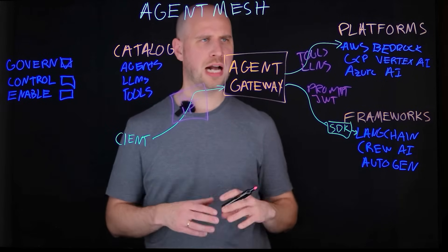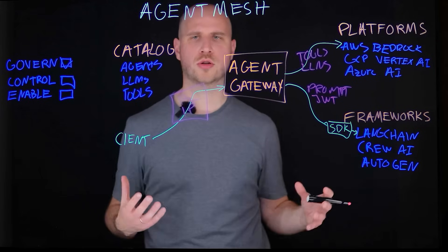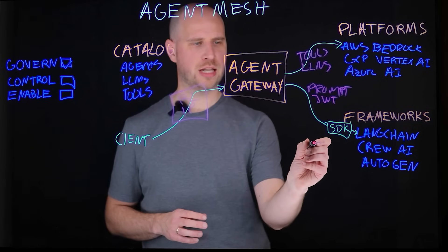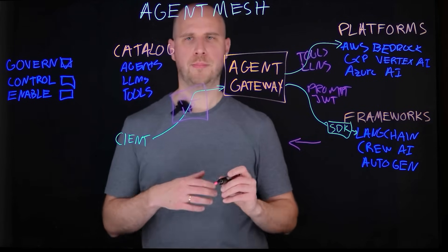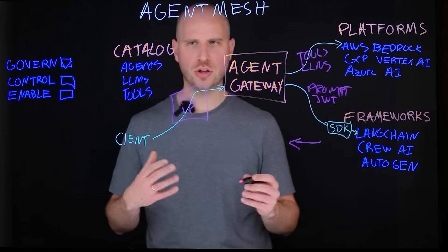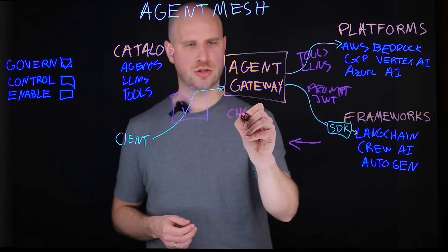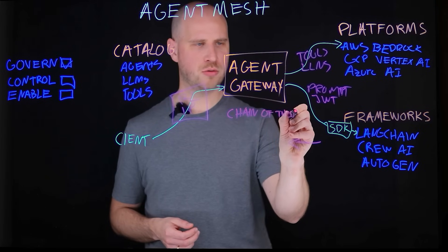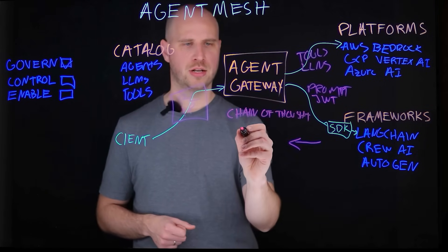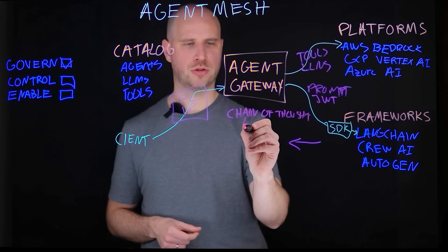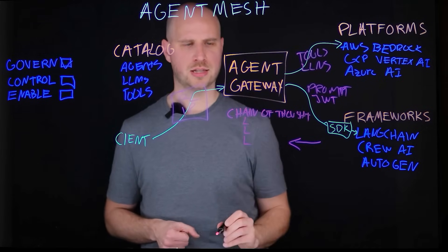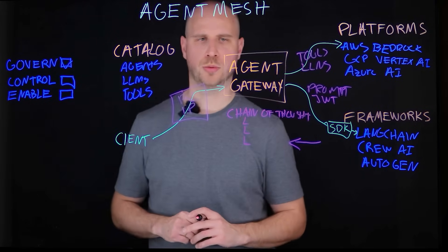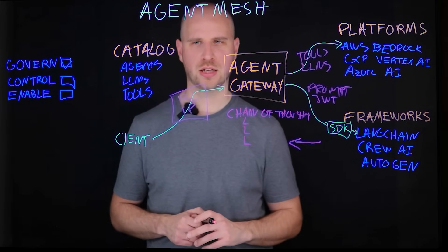Regardless of how Gravity is invoking your agent and what sort of control you're adding to the invocation of those agents, you will get back through the gateway information about that agent invocation. You'll have access to things like the chain of thought — effectively a way to get insight into how the agent actually operated. For example: first it talked to the LLM, then it took an action, then it did this. All that performance data and reasoning is available in the agent control plane in Gravity, thanks to the agent gateway invoking that agent.